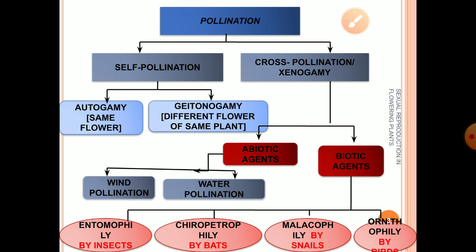Self-pollination is further categorized into two types: autogamy and geitonogamy. When transfer of pollen grains takes place from the anther to the stigma of the same flower, it is known as autogamy. Just imagine a flower where both anther and stigma are already present — when pollen grains are transferred from the anther to the stigma of that same flower, that is autogamy.